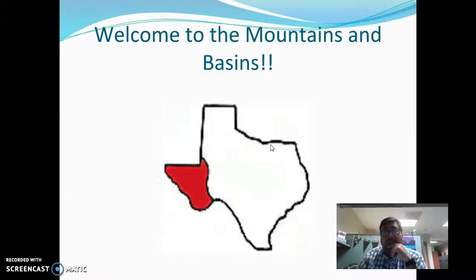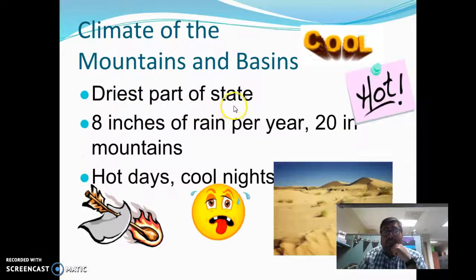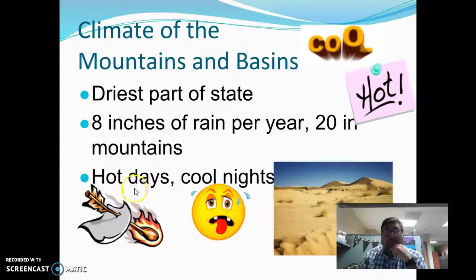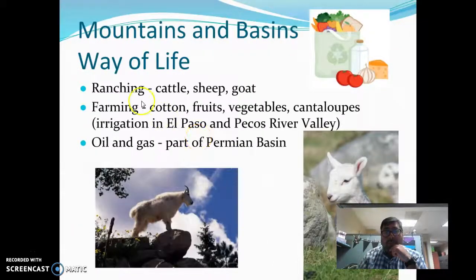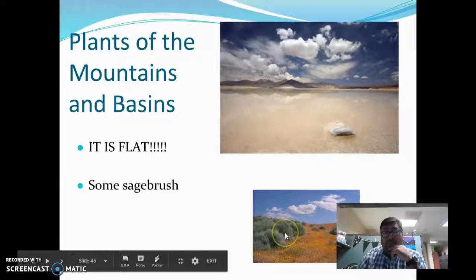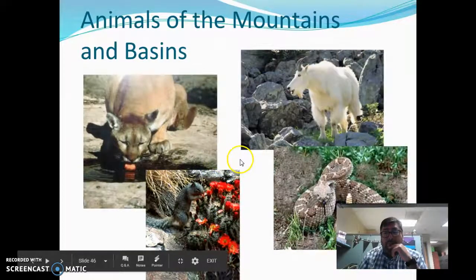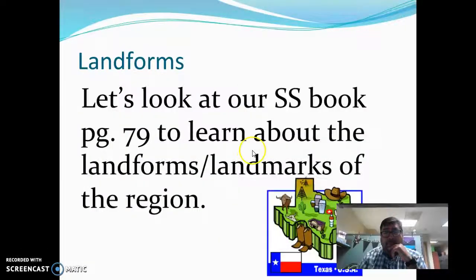The last region is the Mountains and Basins. Cities include El Paso, Pecos, and Presidio. The climate is the driest part of the state — it's very hot, with only 8 inches of rain per year, or 20 inches in the mountains. There are very hot days and cool nights. Ways of life include ranching, farming, and oil and gas. Plants include sagebrush. There are examples of animals found in the Mountains and Basins. Social Studies book page 79 covers the landforms and landmarks of the region.